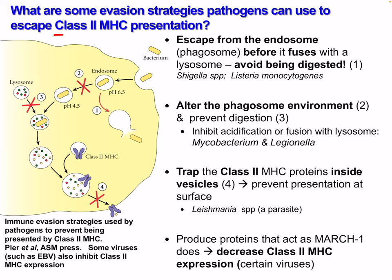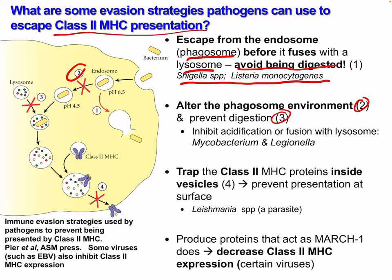Regarding evasion strategies to avoid MHC class 2 presentation: pathogens can escape from the endosome or phagosome before it fuses with the lysosome, avoiding digestion and presentation — examples include Shigella and Listeria. Some pathogens alter the phagosome environment to prevent digestion, including Mycobacterium, which can inhibit acidification or fusion of lysosomes. Some pathogens trap class 2 MHC proteins inside vesicles, preventing surface presentation. Some can produce proteins that act like MARCH1, decreasing class 2 MHC expression — certain viruses can do this.